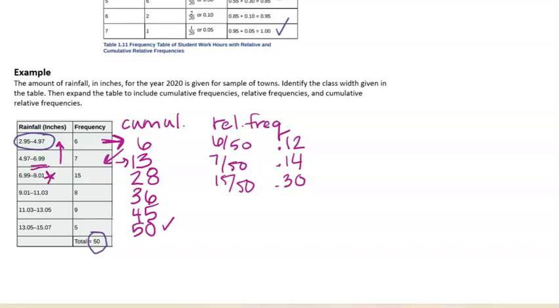This next one would be 8 out of 50, so that would be 16 percent. 9 out of 50 is 18 percent. And 5 out of 50, well, that's a tenth, so 10 percent. And then we could check and make sure when we add all these up that they add up to 1 if you're doing decimals or 100 percent.